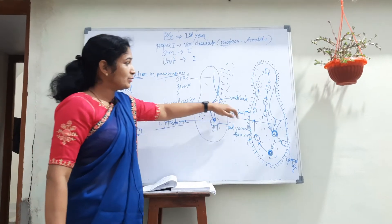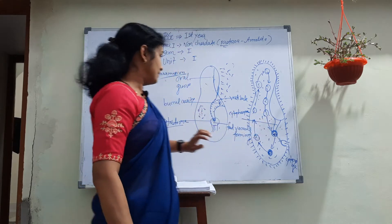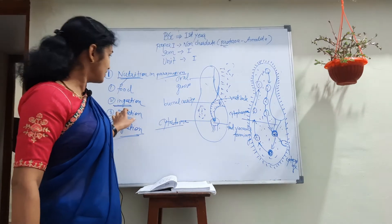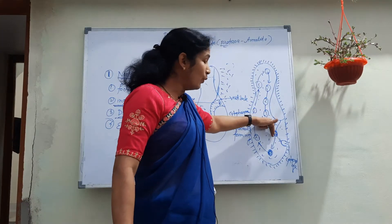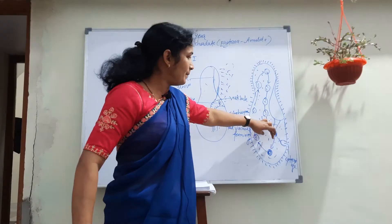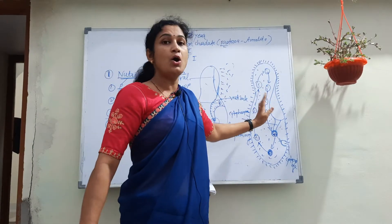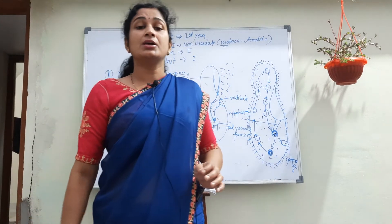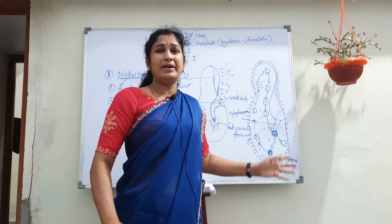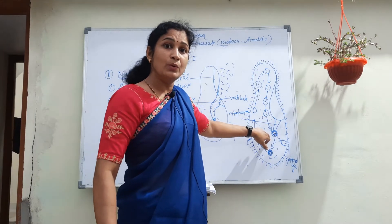These food vacuoles pinch off into the endoplasm of Paramecium. The food vacuoles move through the endoplasm — first posteriorly, then aborally, and then back towards the oral side. This movement of food vacuoles through the endoplasm is not rapid; it is a slow movement of the endoplasm.